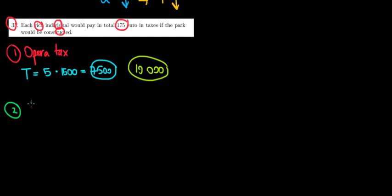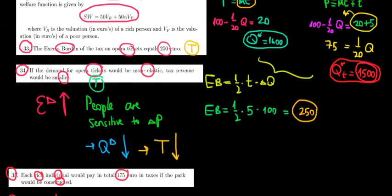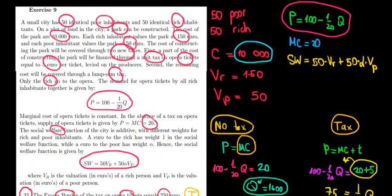So our second tax will be lump sum tax and that would be 2500 euros. And what is a lump sum tax? That's a sum collected from all the citizens and we know that we have 100 total citizens, 50 rich and 50 poor.